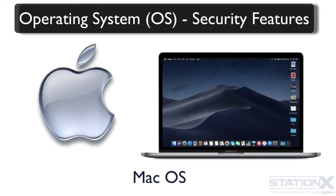Mac OS currently, like Windows, has a reasonable, solid base of security features — things like address space layout randomization, application sandboxing, FileVault 2, privacy controls, and Apple's trusted store apps. All strong security features. But if you were to compare Windows 10 to the latest Mac OS, Windows has more security features and many more third-party security applications available. For example, if you're looking for a good application firewall for Mac OS, you have limited choice — there just isn't as much available. For Windows, the choice is almost endless.